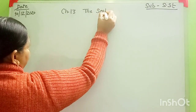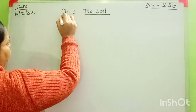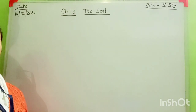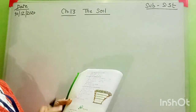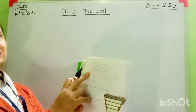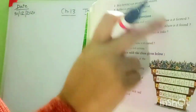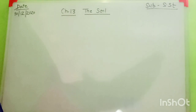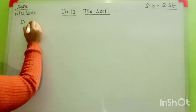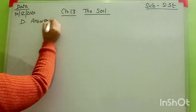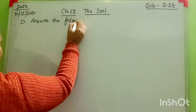Students, get ready with your copy and blue and black pen, and your book also. Open your book to page number 80. The section is part D: Answer the Following Questions. Today we will discuss these six questions.